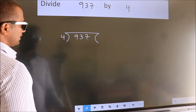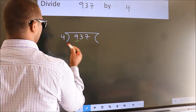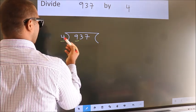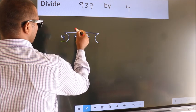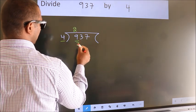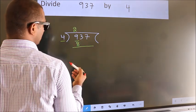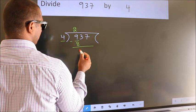Next. Here we have 9, here 4. A number close to 9 in 4 table is 4 twos, 8. Now, we should subtract. We get 1.